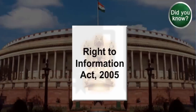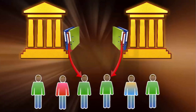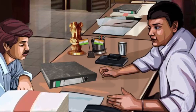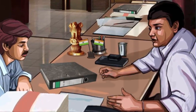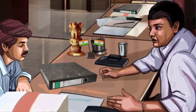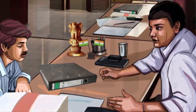The Right to Information Act is a law enacted by the parliament of India, giving citizens the right to access the records of the central government and the state governments. It was introduced to empower citizens to resist the misuse of authority and maintain transparency. Under the provisions of the act, any citizen may request information from a public authority, who is required to reply expeditiously or within 30 days.